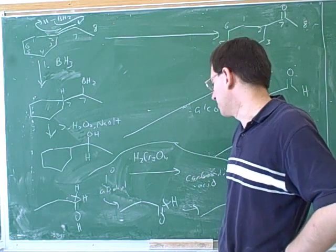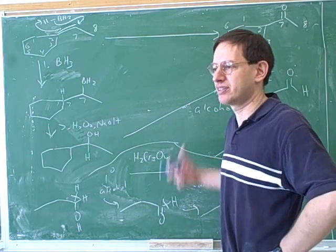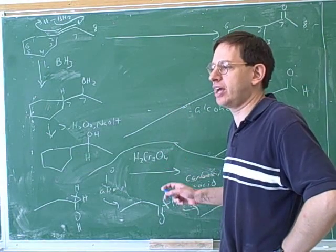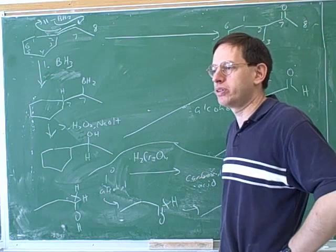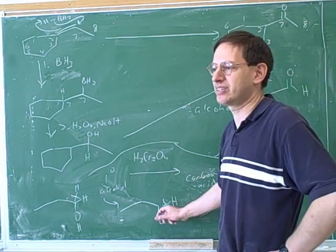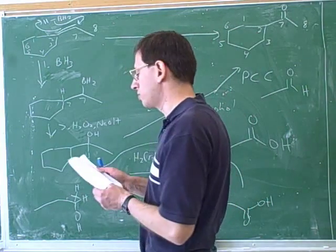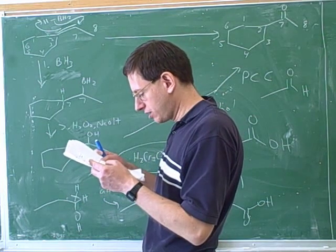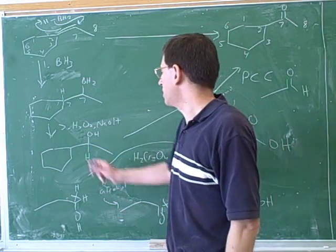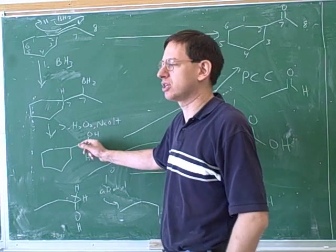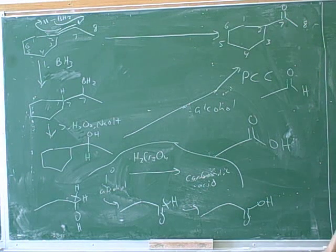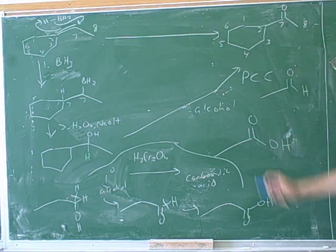So as usual, if we understand the mechanism a little bit, we don't need to memorize the ideas. They make sense. Now we can see why primary alcohols can over-oxidize to carboxylic acids and secondary alcohols can't. Primary alcohols can oxidize twice because they start with two hydrogens. Secondary alcohols can only oxidize once because they start with only one hydrogen on the carbon that's getting attacked. So this primary alcohol case is when we have to be careful and not over-oxidize. Well, the safest thing is just to stick with PCC.